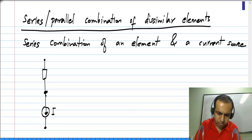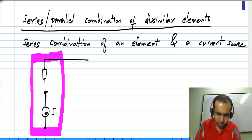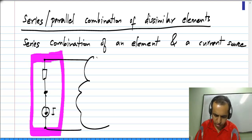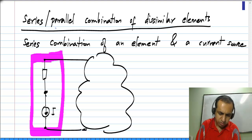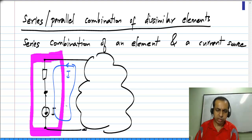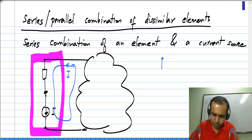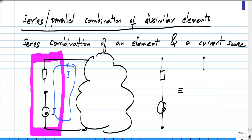Now, this is the combination I am considering. Clearly, if you connect this up to some circuit, we know that because of Kirchhoff's current law, the current that is flowing through the whole circuit has to be equal to I. This means that the series combination of any element and a current source is exactly equivalent to a current source.